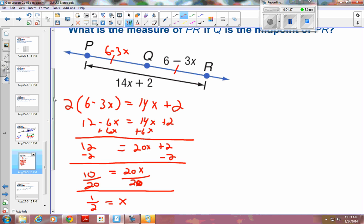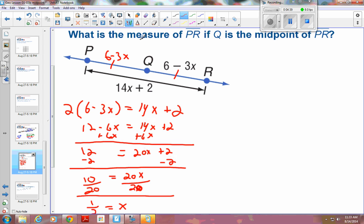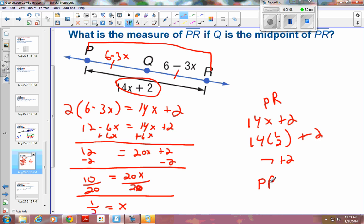But I didn't ask you what X is. Make sure you go back and read the question. What is the measure of PR? PR is from here all the way over to here, so that's that 14X plus 2. 14X plus 2 is what we're looking for, that's what PR is. So that would be 14 times 1 half, because that's what we decided X was, plus 2. So that's 7 plus 2. Final answer is PR, the measure of PR is equal to 9.